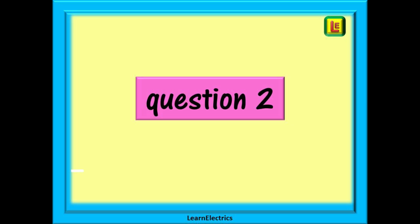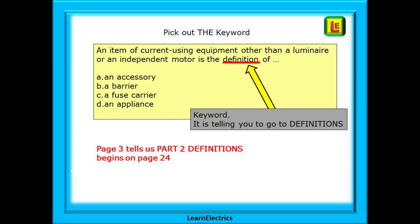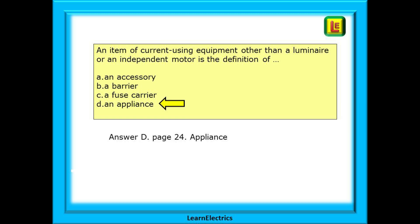On to question 2. An item of current-using equipment, other than a luminaire or an independent motor, is the definition of what? There are four possible answers. The key word is 'definition' — the question is telling you to go to Part 2, Definitions. It couldn't be any plainer than that. Checking on page 3, we see the definitions start on page 24. It is now just a case of comparing each possible answer to the wording in the regulations book. If the wording in the question is an almost exact match for the book, then that is your answer. In this case, answer D — Appliance.